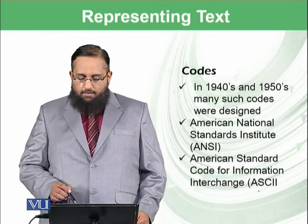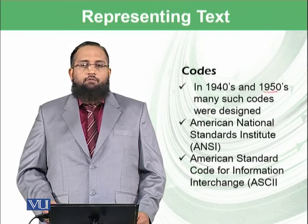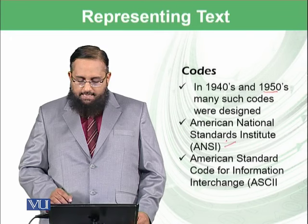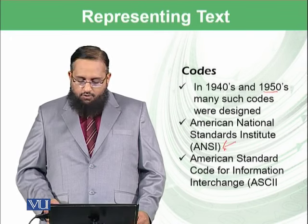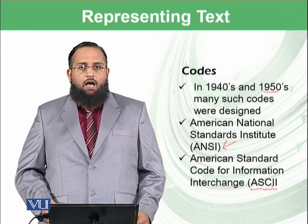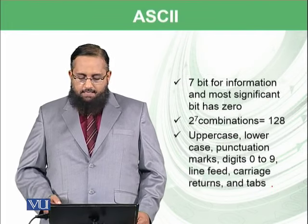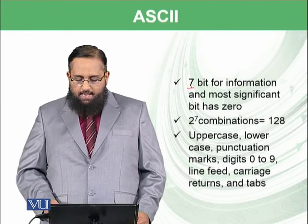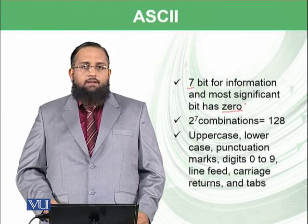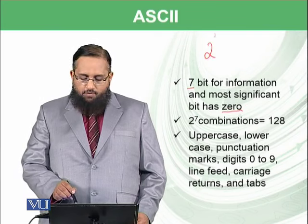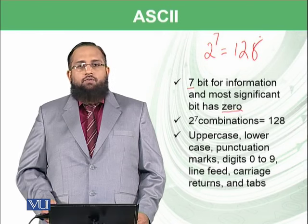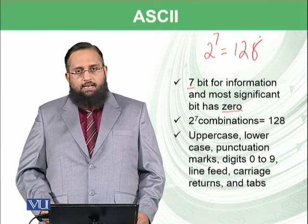How were such codes developed? In the 1940s and 1950s, many such codes were developed by different scientists of the world. Then an authority known as the American National Standard Institute (ANSI) formed the American Standards Code for Information Interchange, called ASCII (pronounced 'ASCII'). ASCII had 7 bits for information representation and the most significant bit was just 0. With 7 bits, we can form 2 raised to the power of 7 combinations, which equals 128.